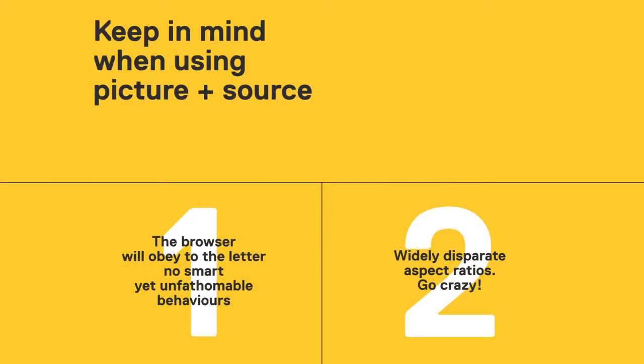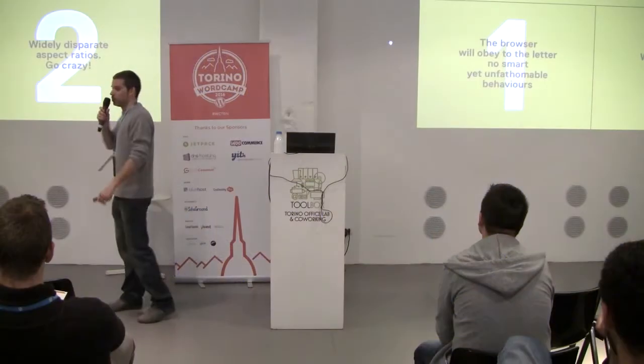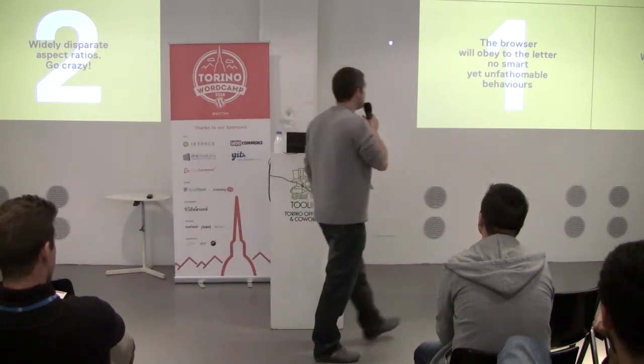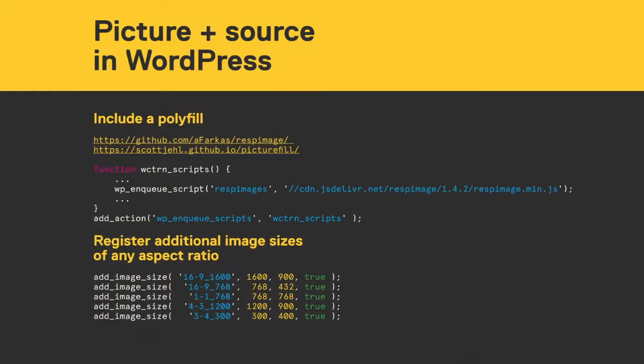To sum up: when using the picture and source solution, you don't have the limitations of the srcset and sizes solution. The browser will obey your media queries to the letter — no smart behaviors — and you won't need to worry about aspect ratios anymore. You can use whatever aspect ratio you want.